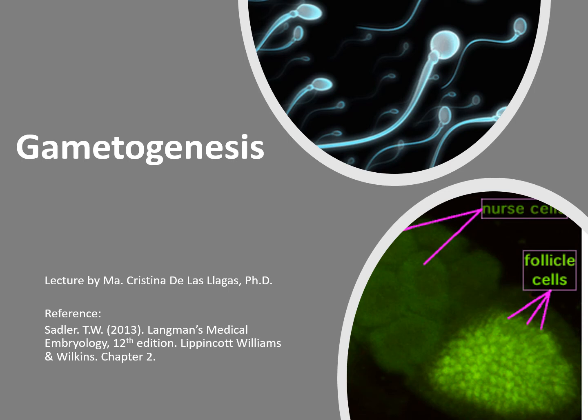Development begins with fertilization, the process by which the male gamete, the sperm, and the female gamete, the oocyte, unite to give rise to a zygote. The gametes are derived from primordial germ cells or PGCs that are formed in the epiblast during the second week and that move to the wall of the yolk sac.